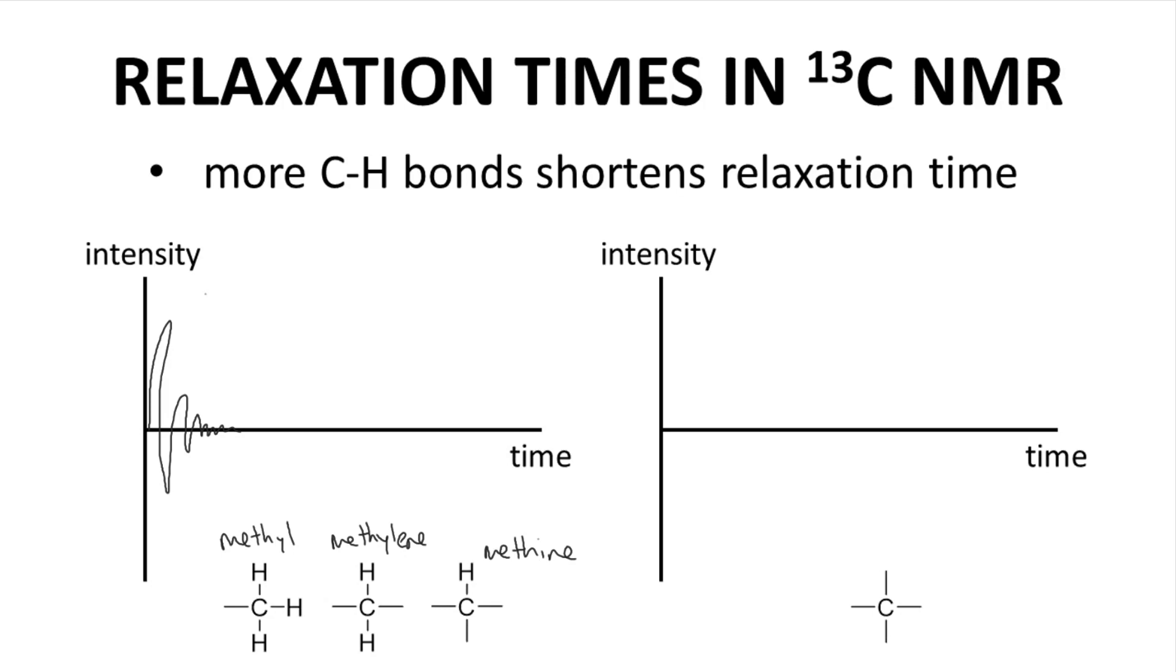The spectrometer reads the signal for a period of time to generate the spectrum peaks. While these nuclei behave similarly, quaternary carbons with no hydrogens are different.